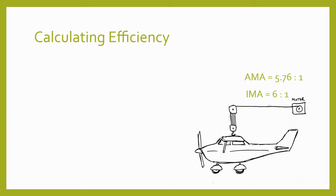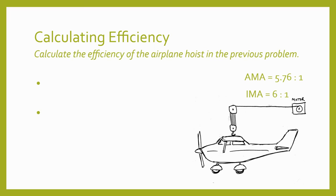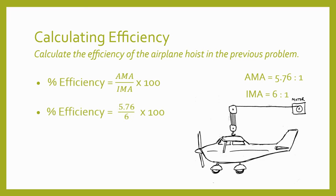Let's calculate the efficiency of the airplane hoist. We found the AMA to be 5.76 to 1 and the IMA to be 6 to 1. AMA over IMA gives a ratio of 0.96 to 1, and when we multiply by 100 we get the efficiency of the hoist: 96%. So 96% of the work put into the machine was converted into useful work output.